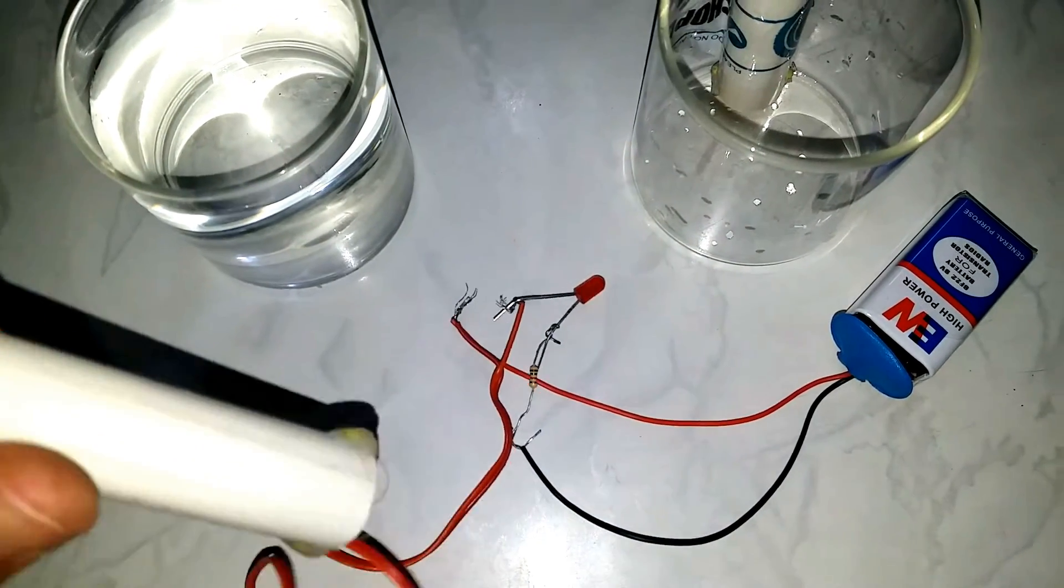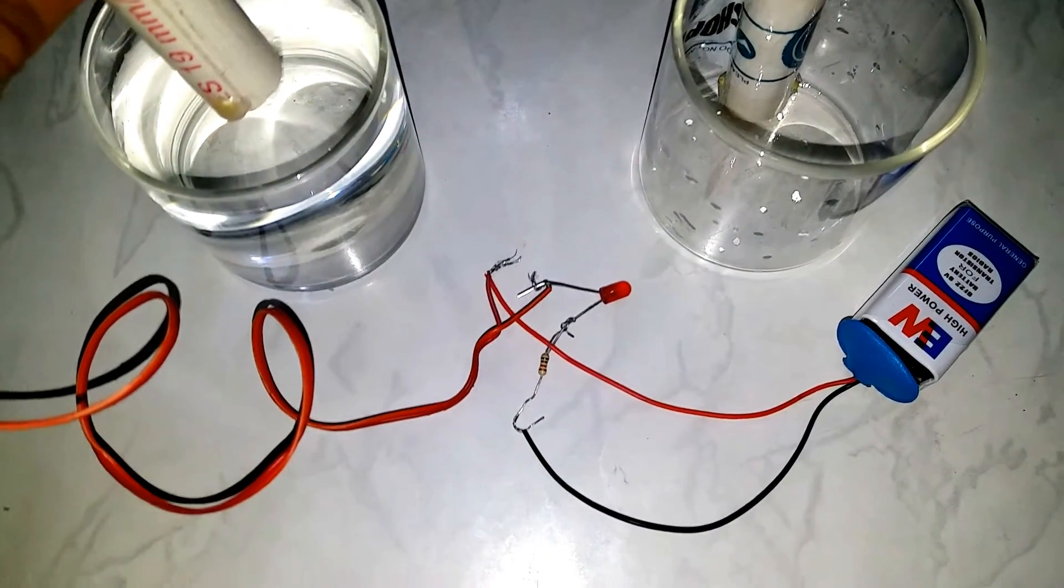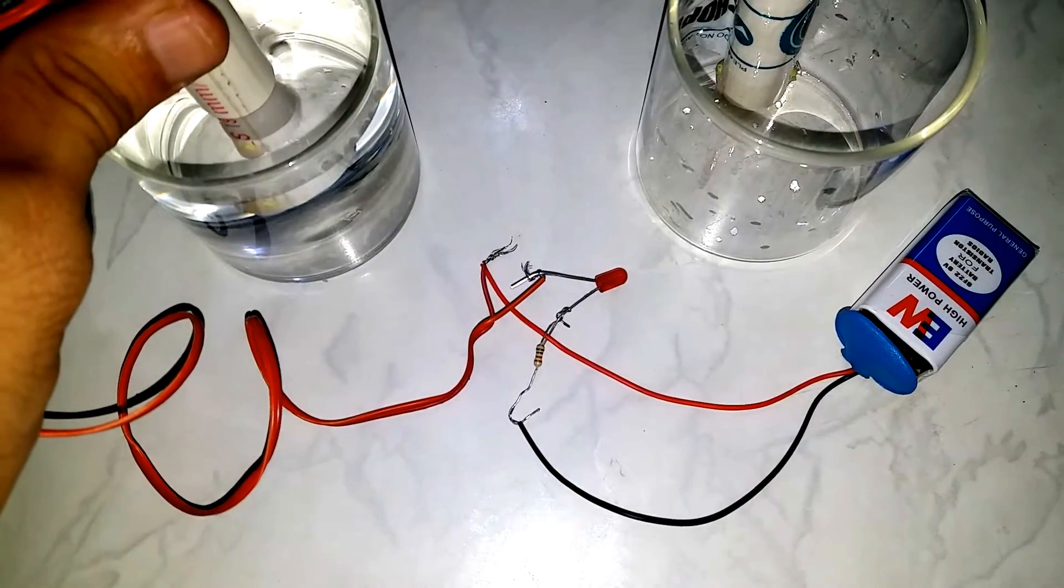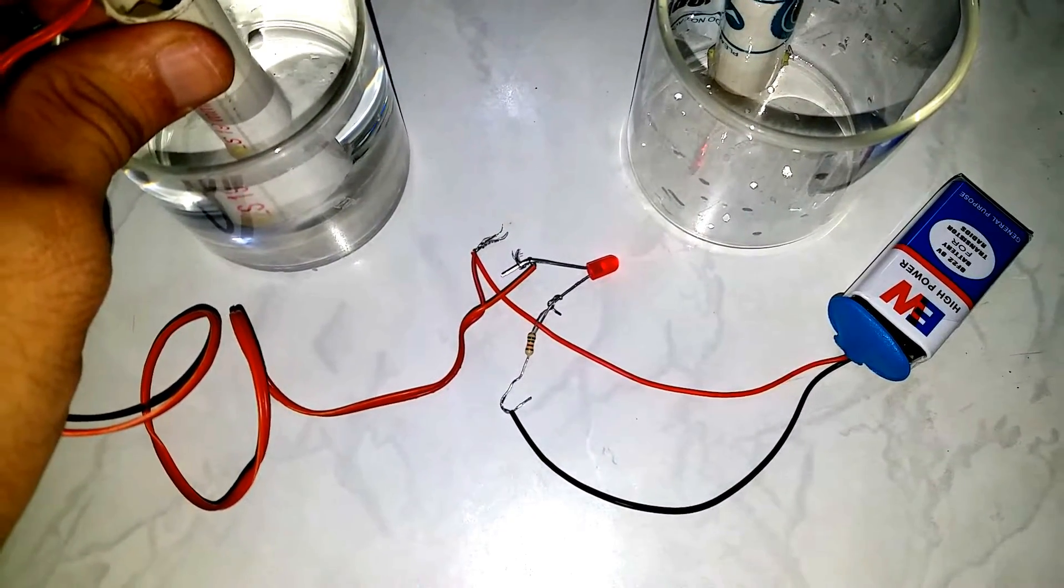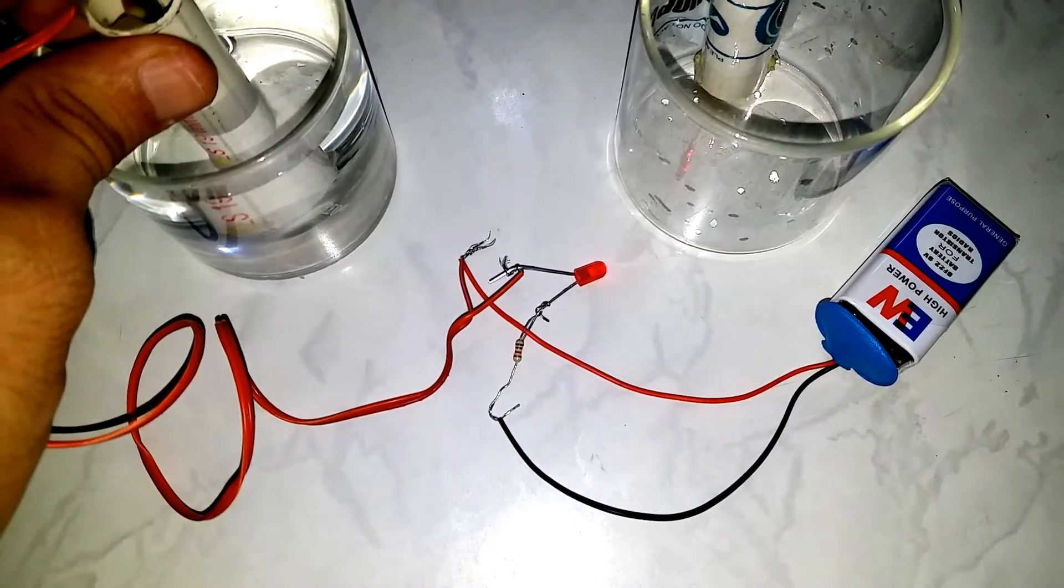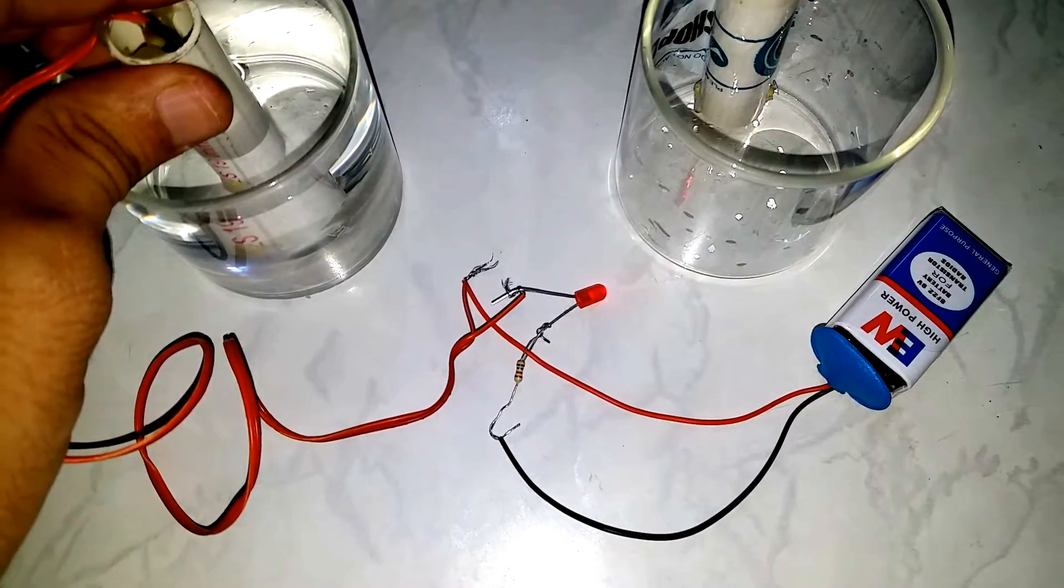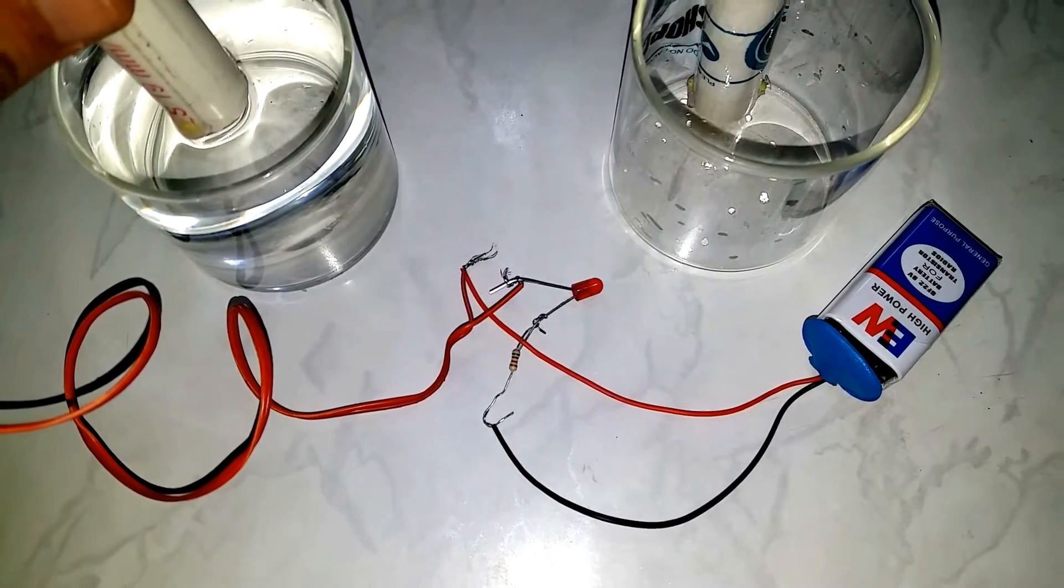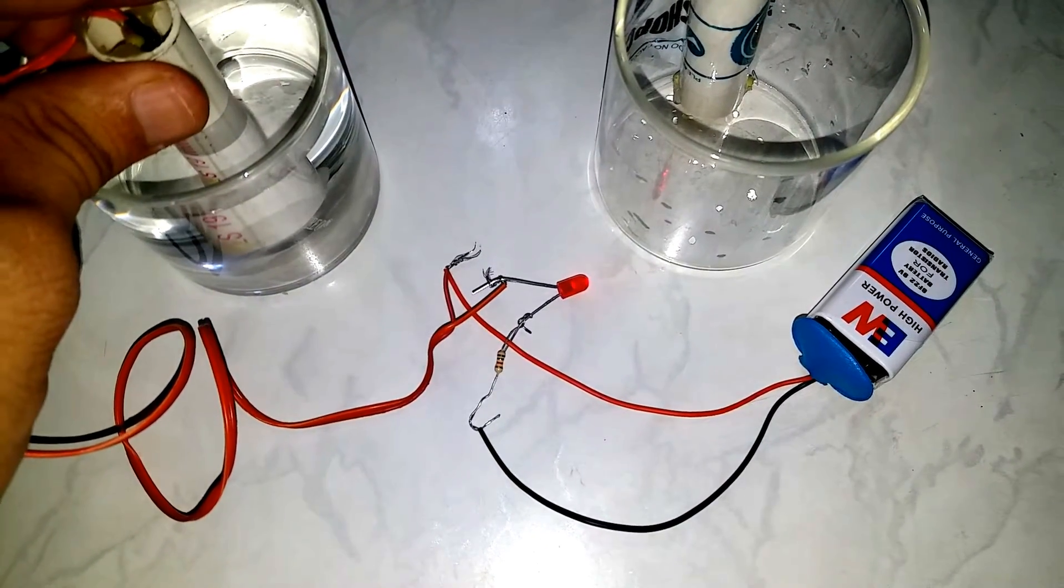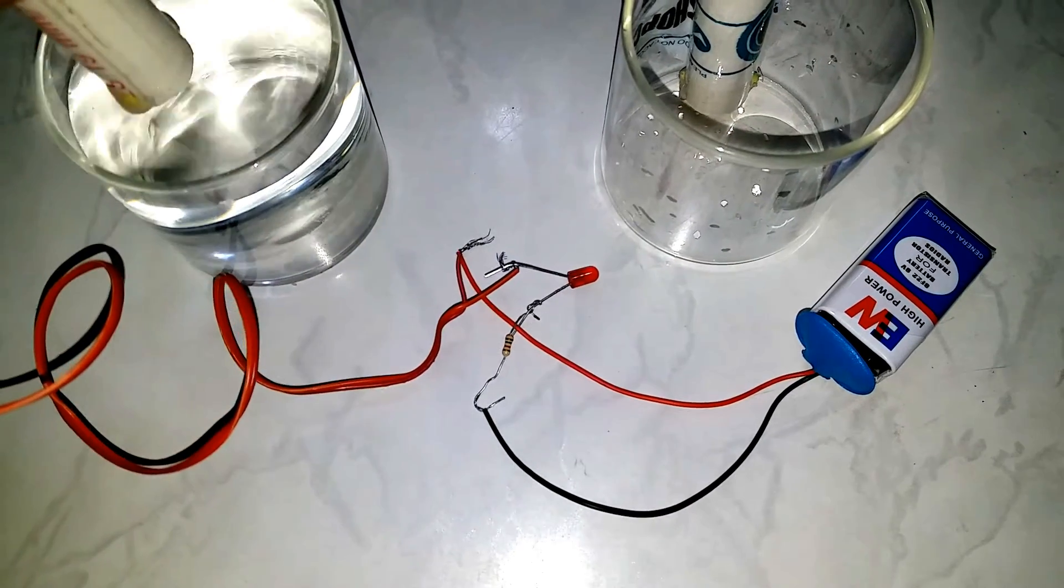Now we'll check in the water. So now you can see when the sensor is half dipped, the LED will glow. Again the LED switched off. Glow and off.